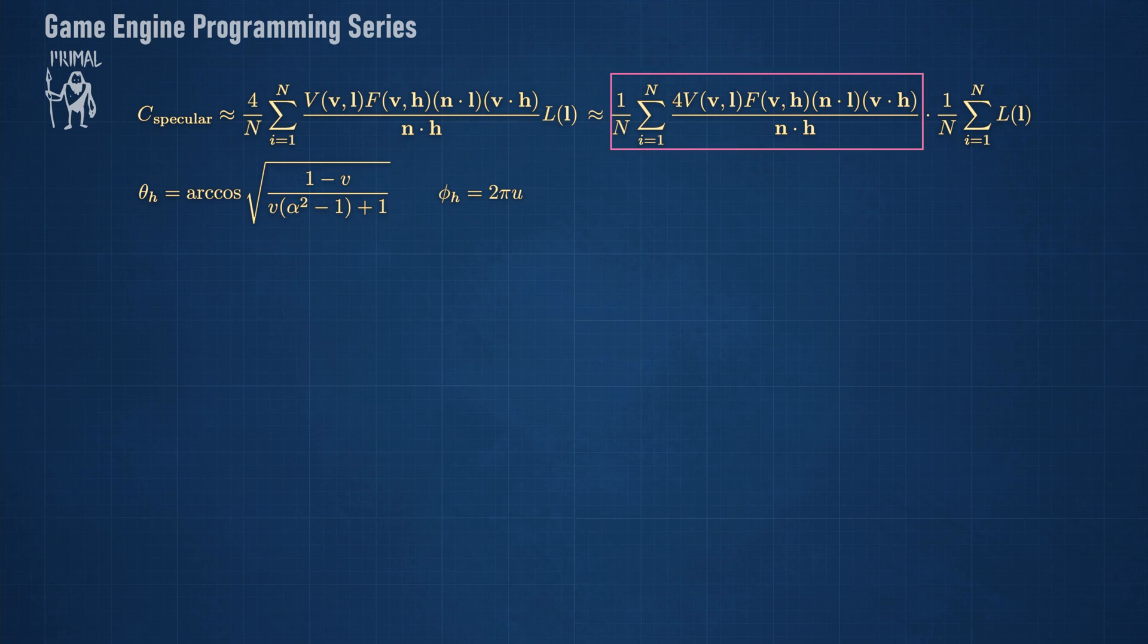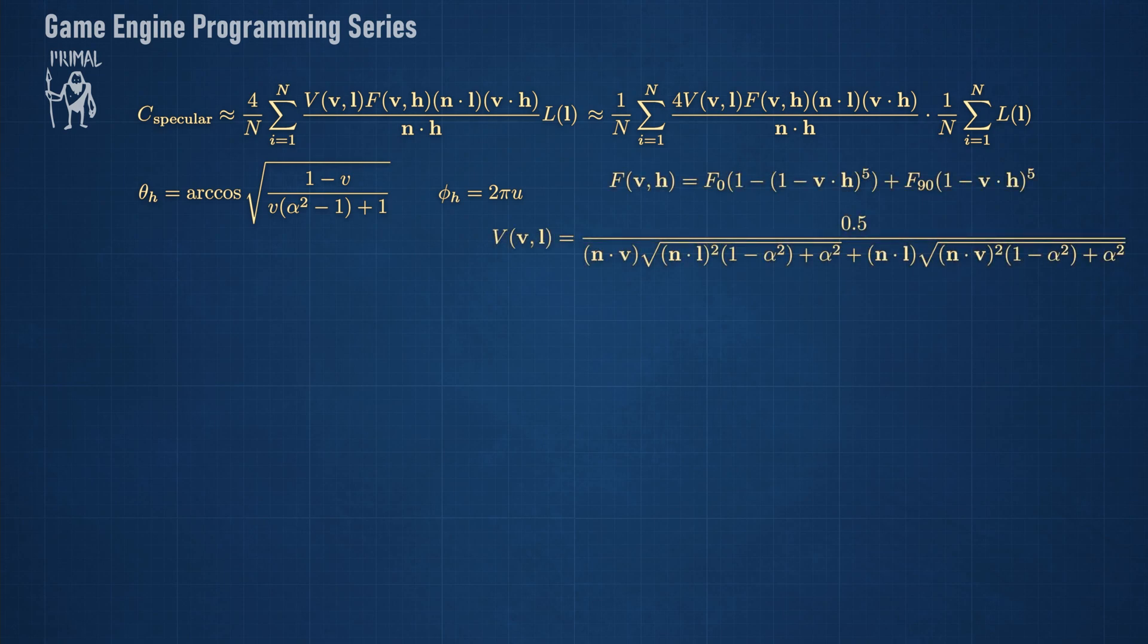The other part depends only on the view vector and the roughness value. Therefore, we only have to calculate it once and it can be reused for all images. The sum contains the Fresnel function and the correlated geometric function.